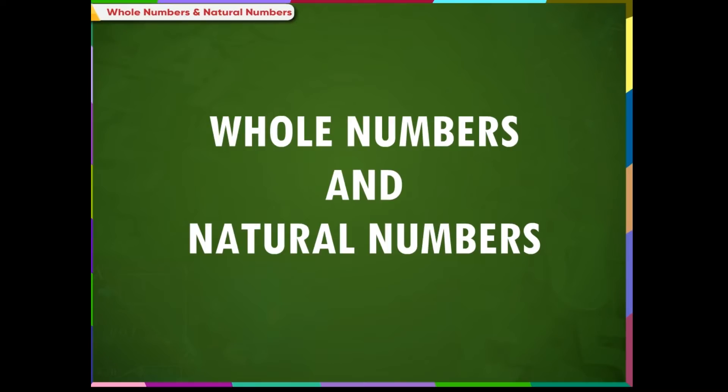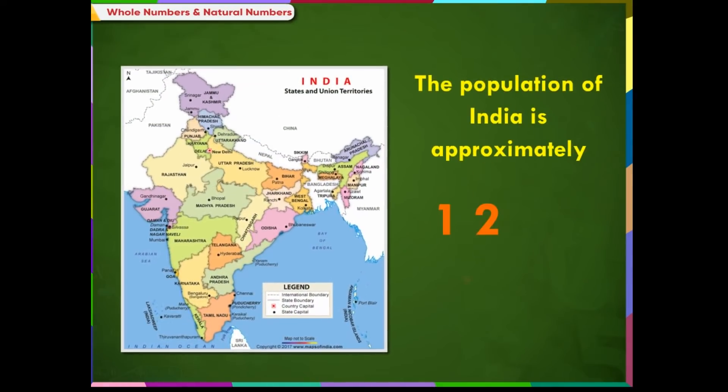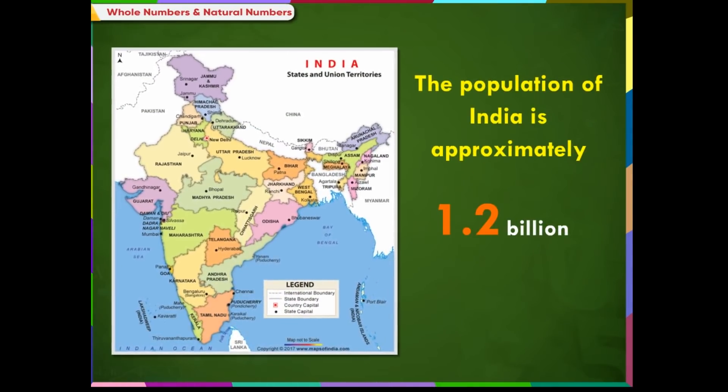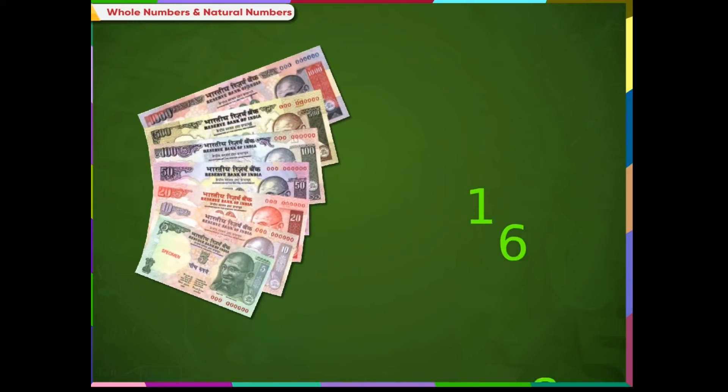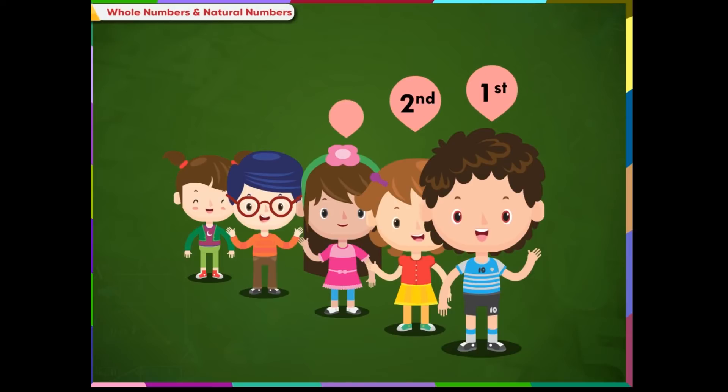Whole Numbers and Natural Numbers. We see numbers all around us. We count population of a country in numbers. We count money in numbers. We find area and perimeter of our land using numbers. We even talk about the position of students standing in a queue with numbers.